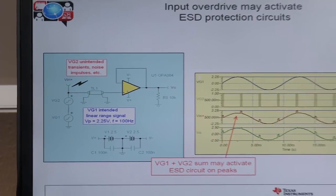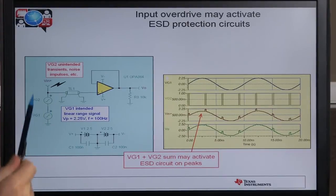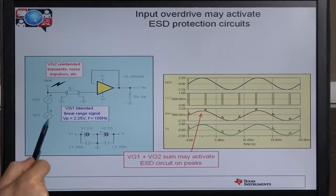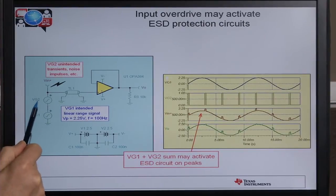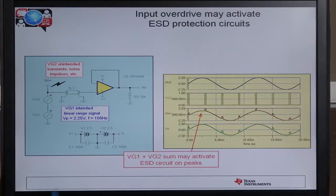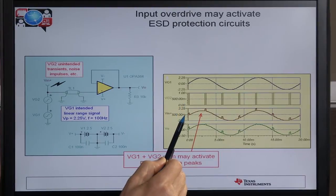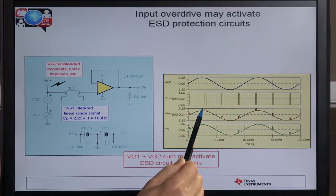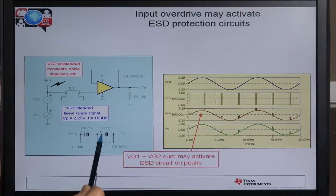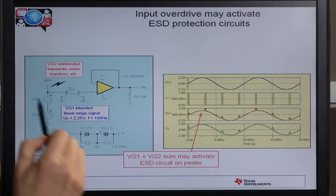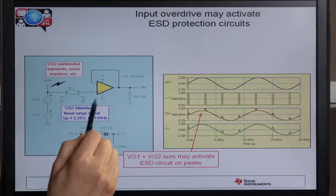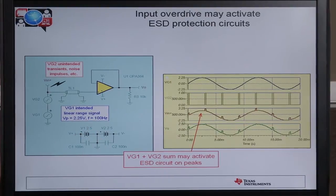This is an example of an operational amplifier in normal operation where we have an intended signal VG1, and now a signal VG2 is being imposed on that intended signal. VG1 has a range of minus 2.25 to plus 2.25 volts. VG2 is a transient riding on that input signal, and the sum of them actually takes the input up to plus 3.25 volts — which is greater than the plus 2.5 volts applied to the positive supply rail. So we have an EOS situation both at the input, and if that is coupled through the internal ESD protection to the supply pin, we can have EOS there as well.